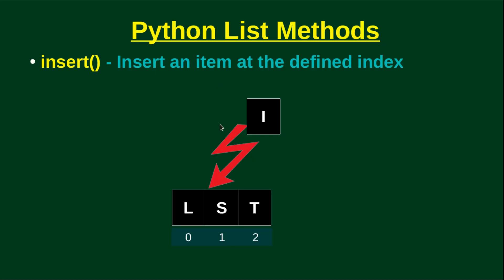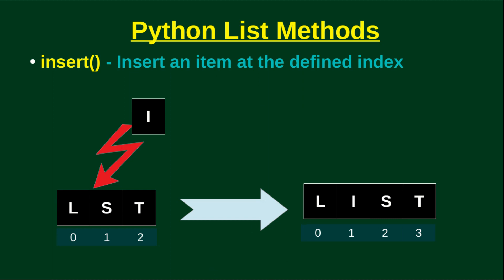Now we have a list and we will use the last position to add to the end. But for a specific position, we will use the insert method. For example, if you have a list called lst, you can call list1.insert at the second position to add the element.